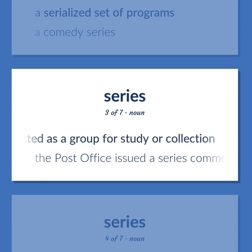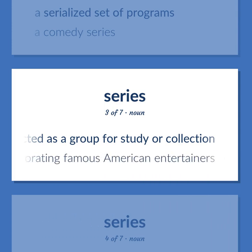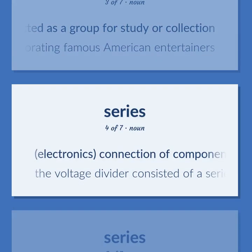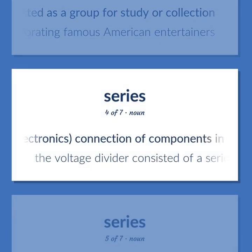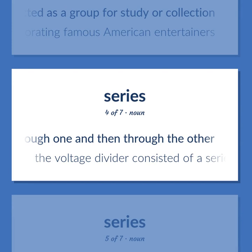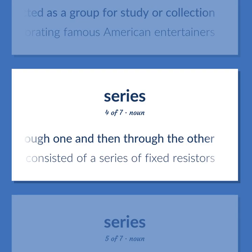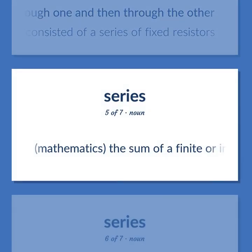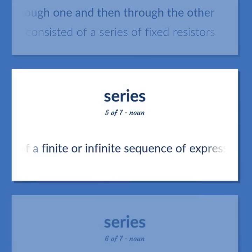The post office issued a series commemorating famous American entertainers. Electronics: connection of components in such a manner that current flows first through one and then through the other. The voltage divider consisted of a series of fixed resistors. Mathematics: the sum of a finite or infinite sequence of expressions.